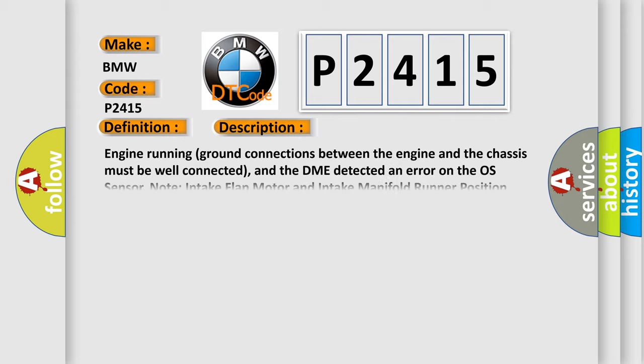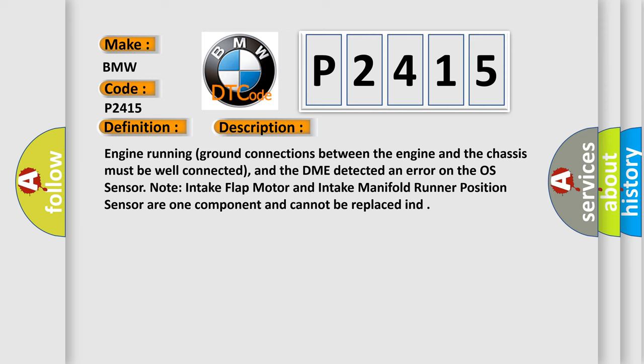And now this is a short description of this DTC code. Engine running, ground connections between the engine and the chassis must be well connected, and the DME detected an error on the O2 sensor. Note: intake flap motor and intake manifold runner position sensor are one component and cannot be replaced individually.